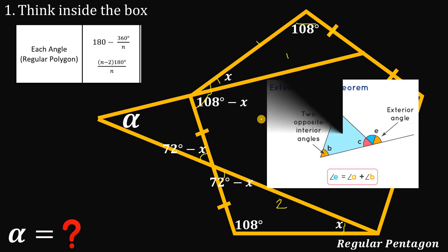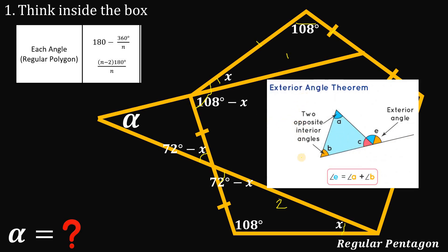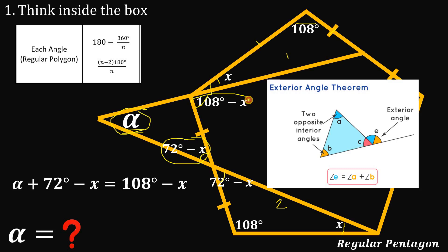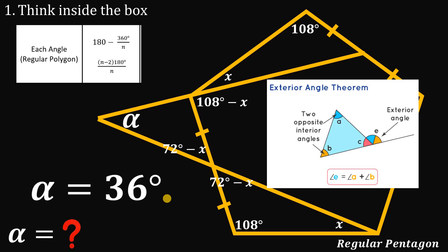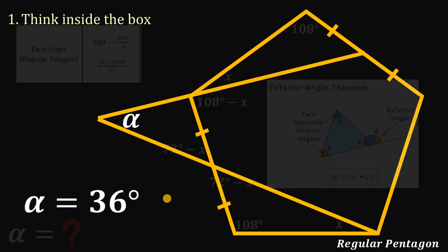Now we use the exterior angle theorem, which states that the sum of two opposite interior angles equals the exterior angle. So: alpha + (72° − x) = 108° − x. Adding x to both sides cancels the x terms. Then subtracting 72° from both sides gives: alpha = 108° − 72° = 36°. The measure of angle alpha is 36°.